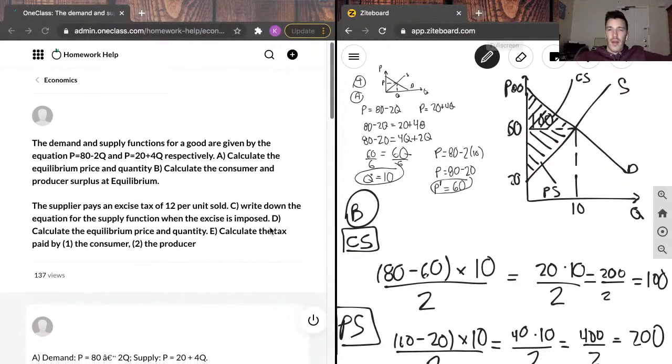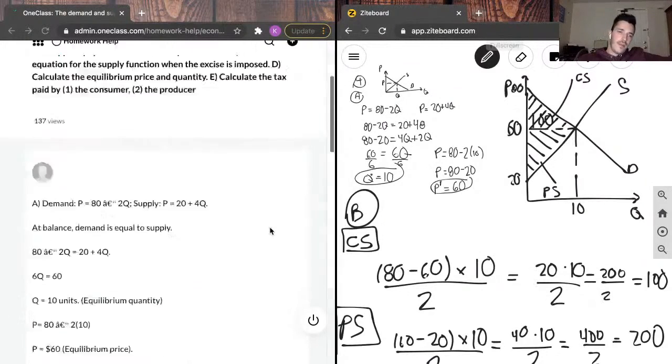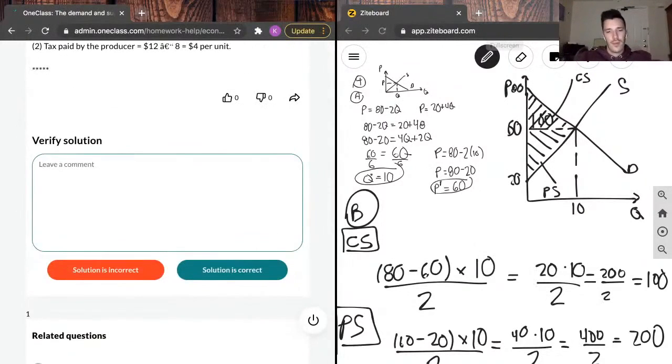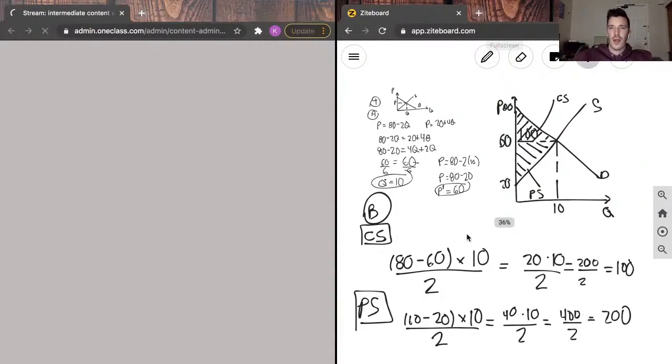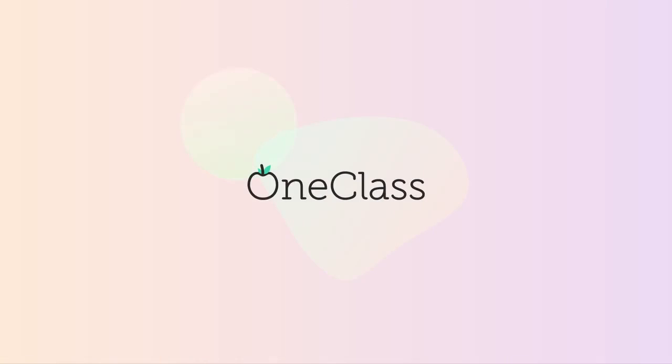But these are the two kind of general steps you need to take to one, solve for equilibrium. And then get your consumer surplus and your producer surplus. Okay. Give you guys a quick second to take a picture of that. Thank you.